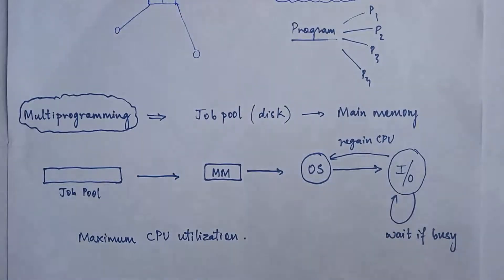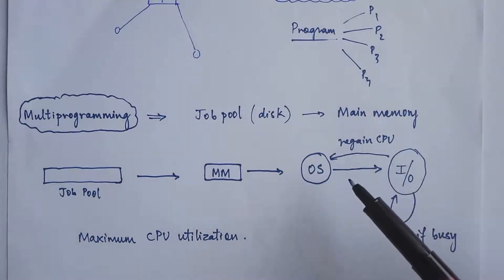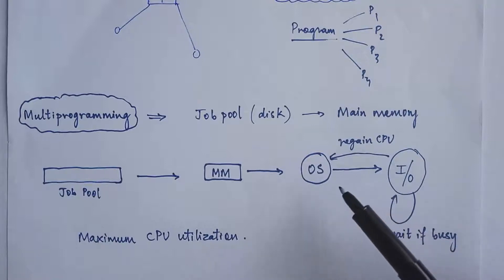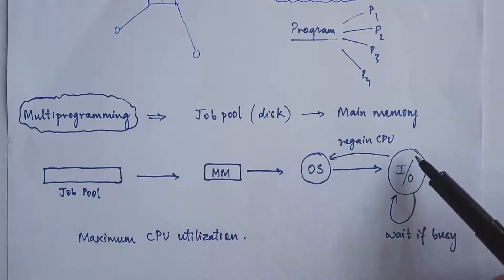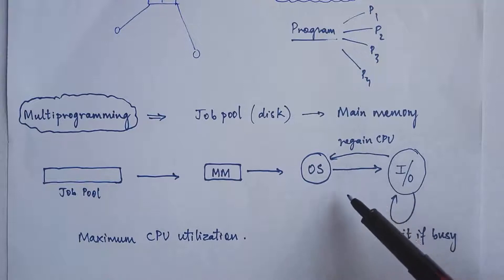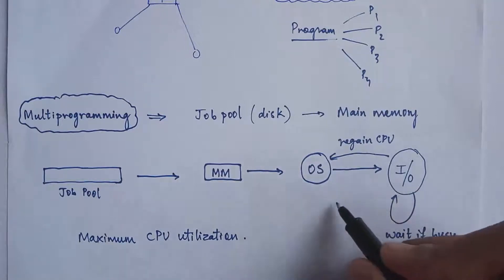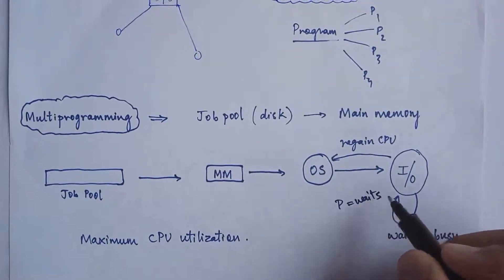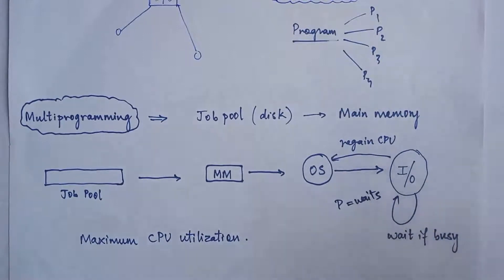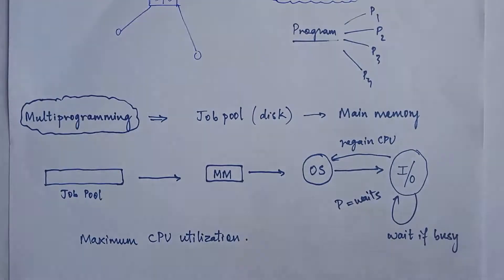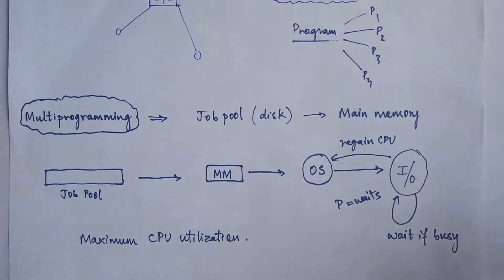In the case of a non-multiprogramming system, the CPU sits idle during this waiting period — that is, until the IO device becomes free the process keeps on waiting. Along with the process, the CPU also sits idle. In a non-multiprogramming system, the CPU completes the process entirely and then goes on to some other process.